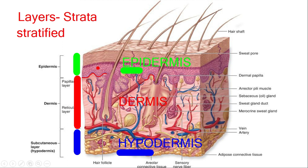Under the epidermis, blood vessels are present in the dermis. The blood vessels of the dermis form capillary networks, and diffusion supplies the epidermis with oxygen and essential nutrients.